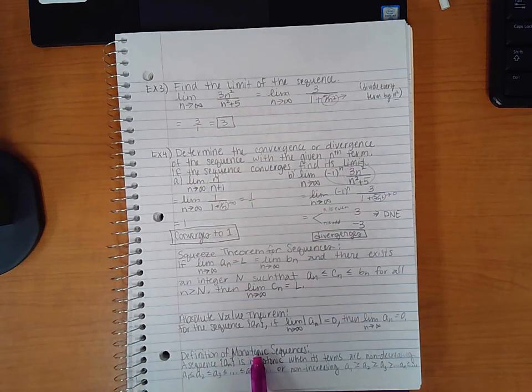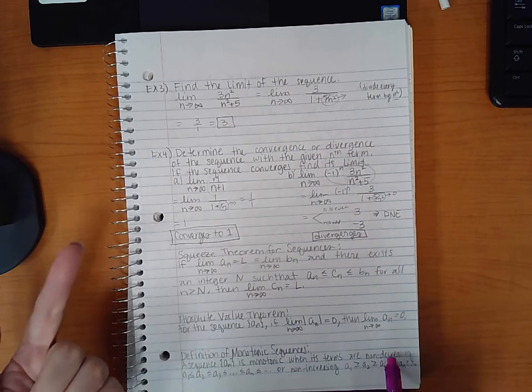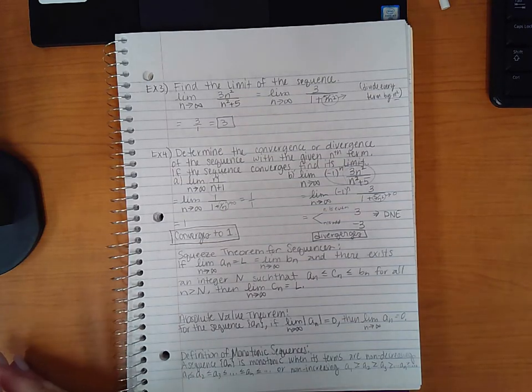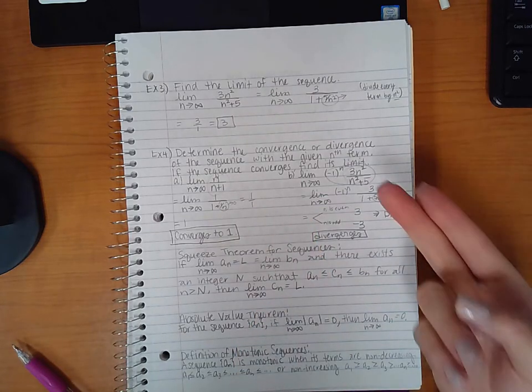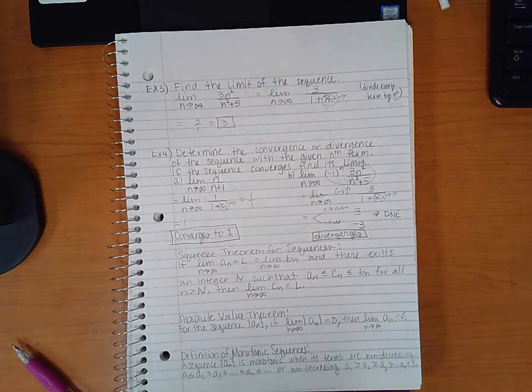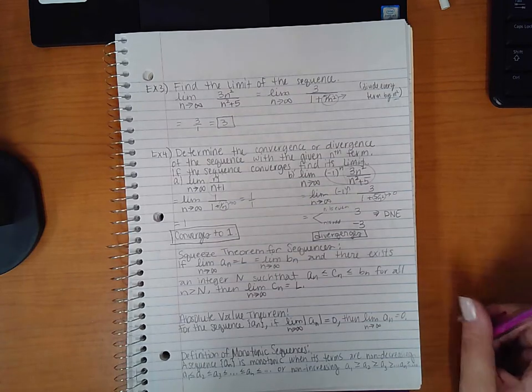And then we have the definition of monotonic sequences. So a sequence a_n is considered monotonic when its terms are non-decreasing. That means it could increase or it could be constant, so that's why you see the less than or equal to, because that means this guy is bigger than that guy meaning it's increasing or they're equal which means it's constant. So non-decreasing means yes it's not decreasing but it could be increasing or it could be constant. Same thing goes for when something is non-increasing. That just means it could be decreasing or it could be constant, which is again why you see the inequalities with the equal sign underneath.